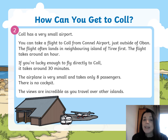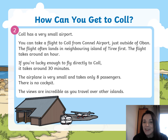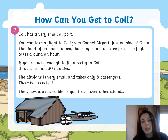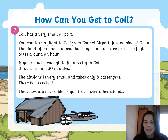The aeroplane is very small and takes only eight passengers. Can you imagine being in an aeroplane that only has room for eight people? It's smaller than a bus. The views are incredible as you travel over other islands — because it's a shorter journey you don't need to go as high, so you'd be able to see all of those Hebrides islands, which would be amazing.